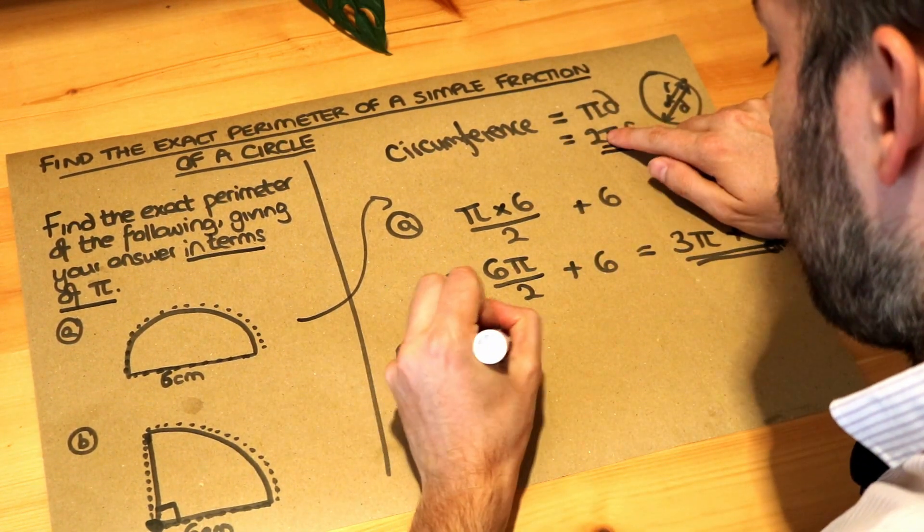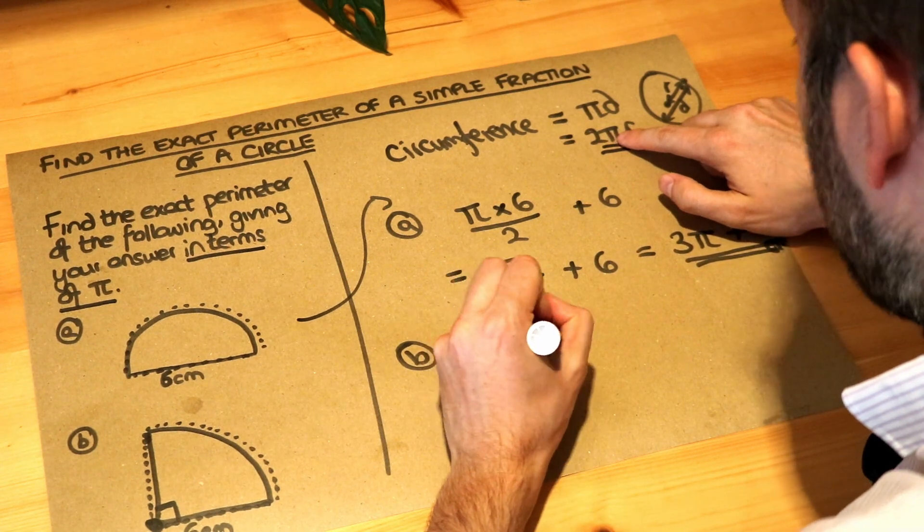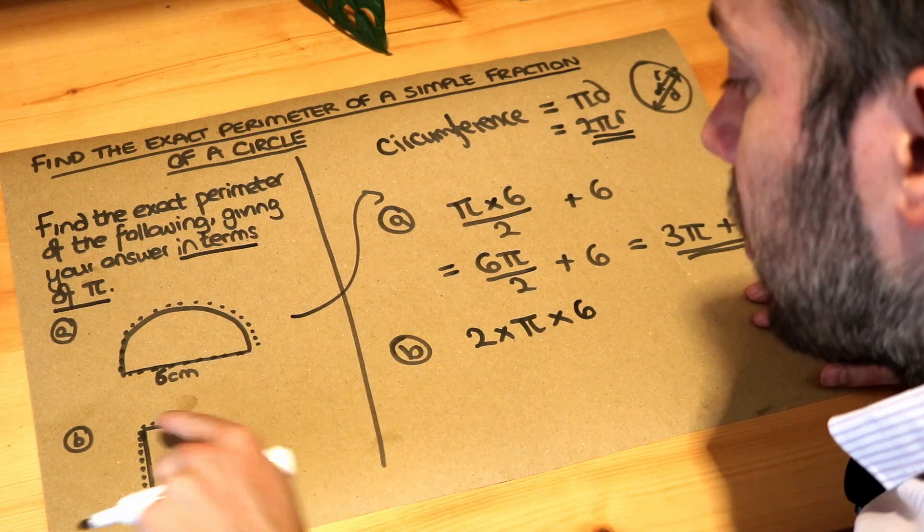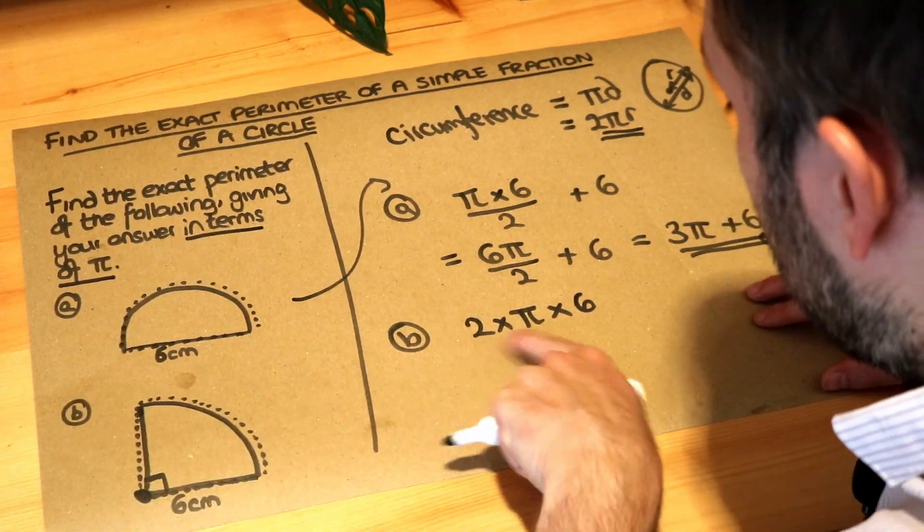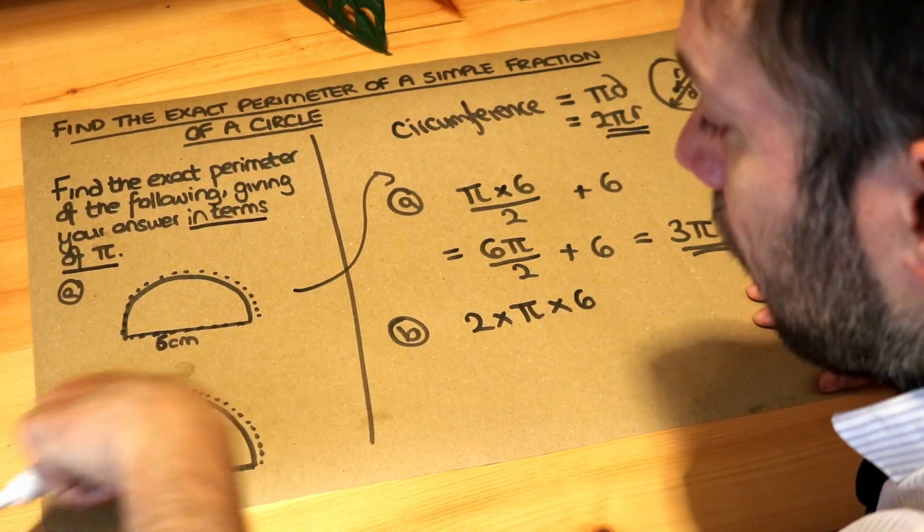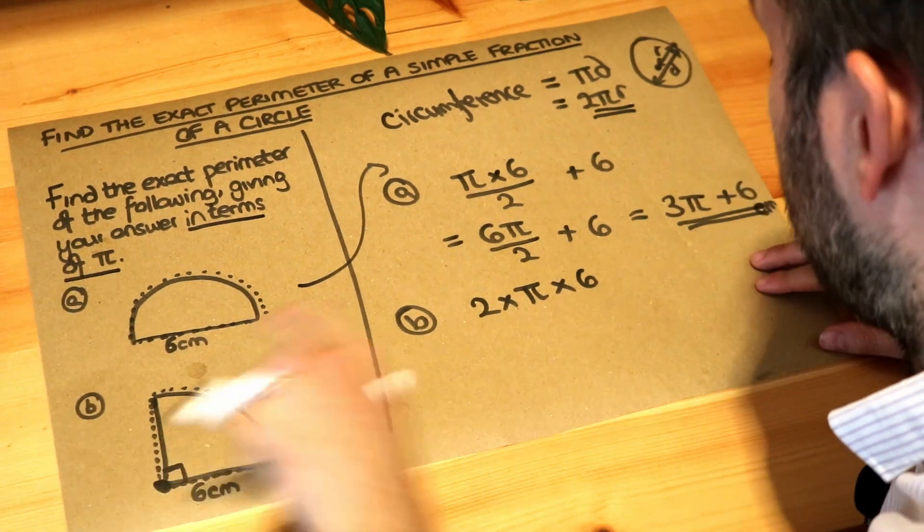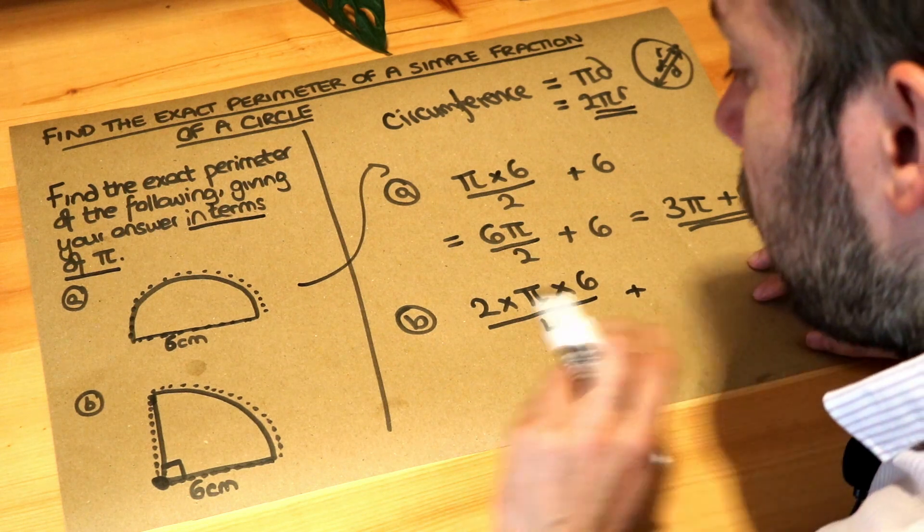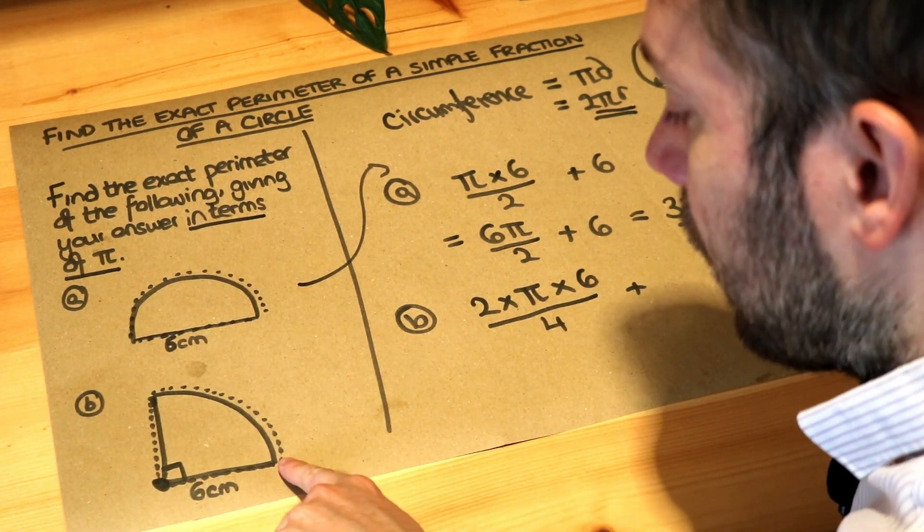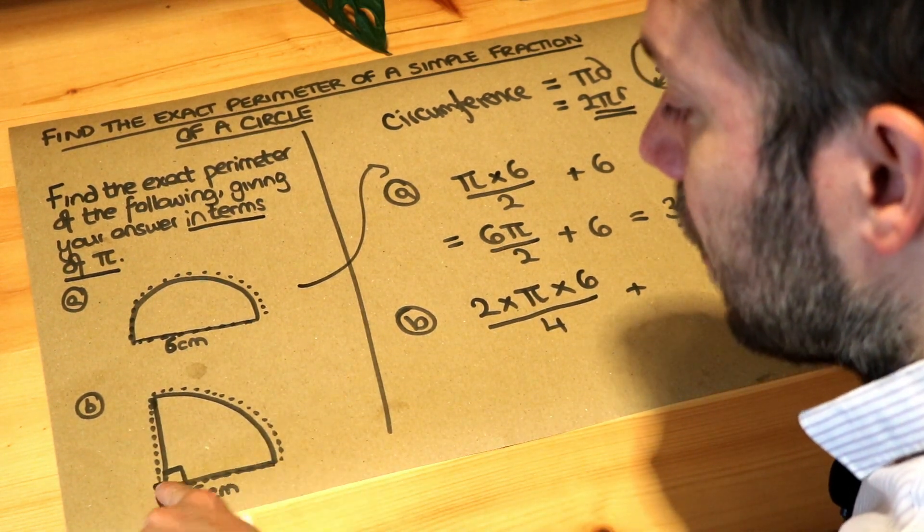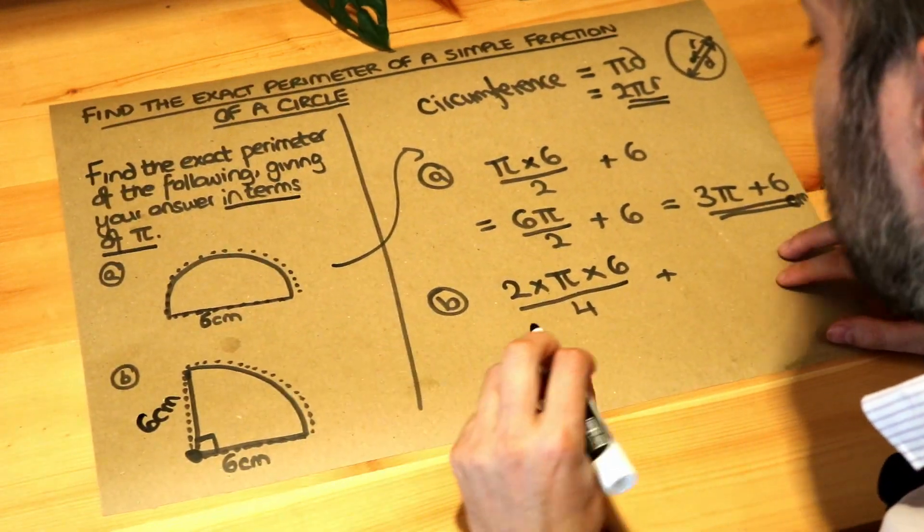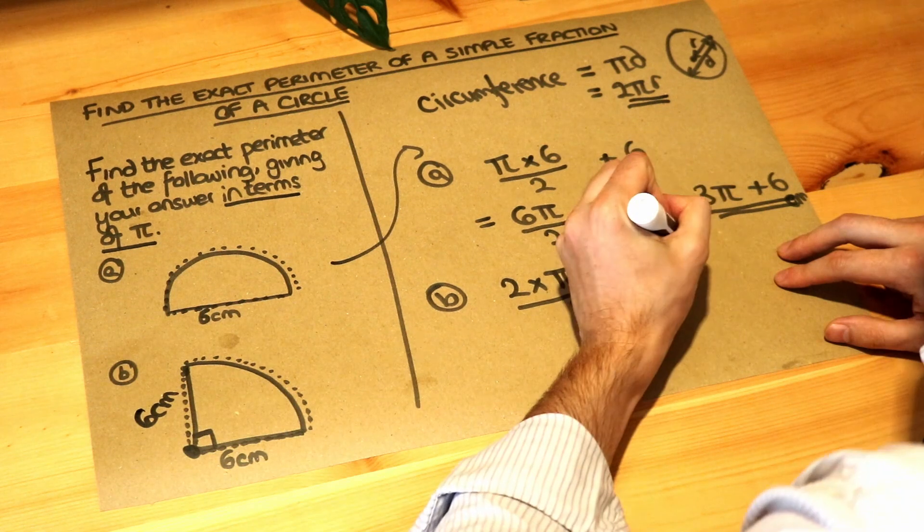So 2 times pi times the radius, which is 6. But we only want a quarter of the circle. This will give us all the way around the full circle if it was a full circle. So we need to divide this by 4. But we want to add on this length and this length. Well, this length here is clearly 6. And you can see this is also the radius of the circle. So that would also be 6 centimetres. So we're going to add on 2 lots of 6, which is 12.